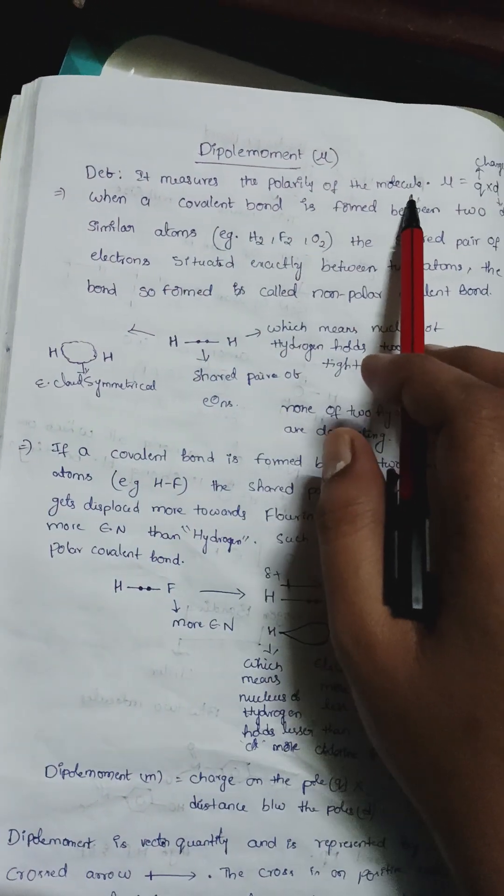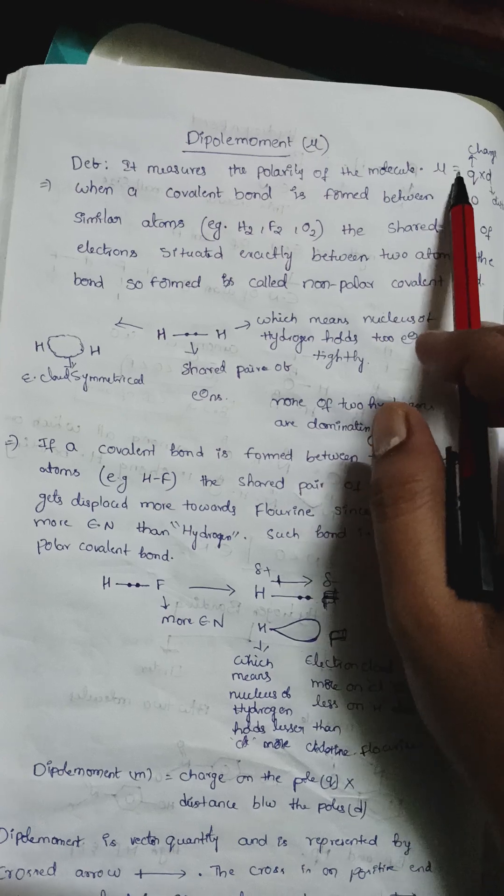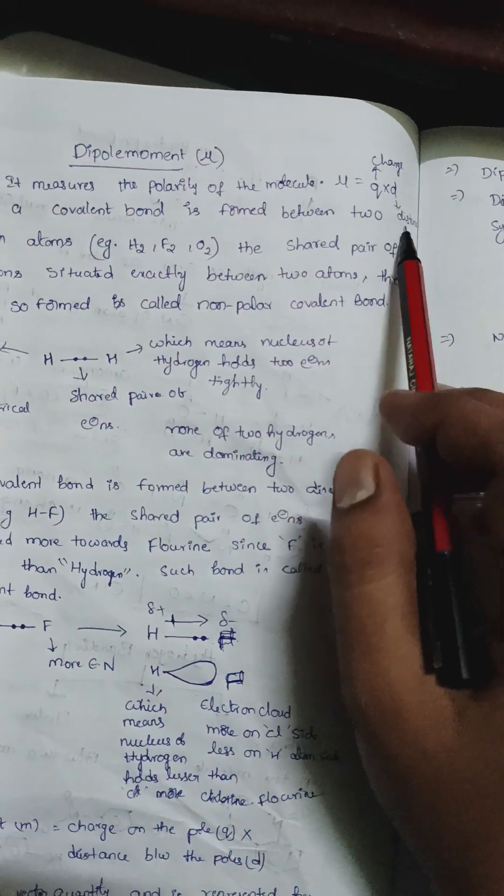Dipole moment measures the polarity of the molecule, denoted by mu. Mu equals q into d, where q is the charge and d is the distance.